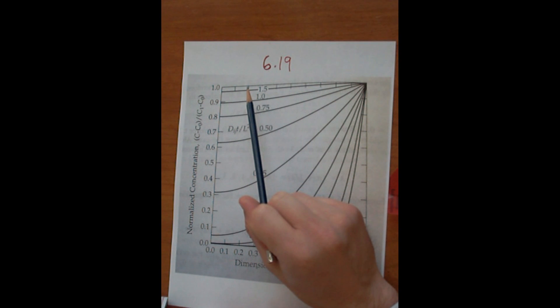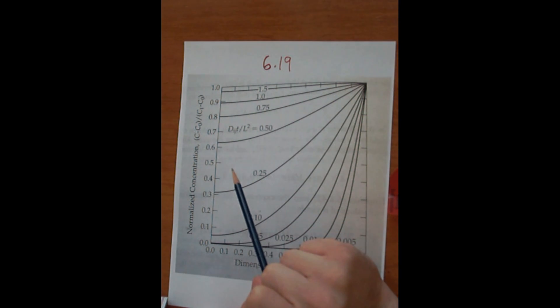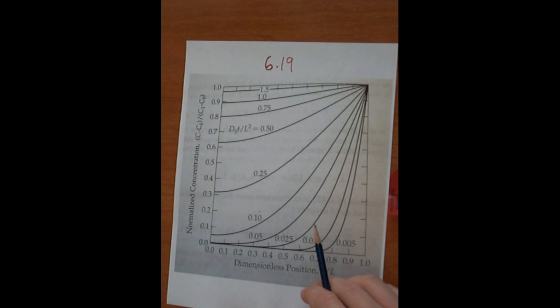So it takes about tau equals 2 to reach a point of steady state where the concentration throughout the slab is the same.